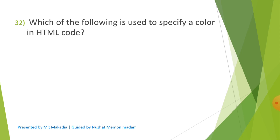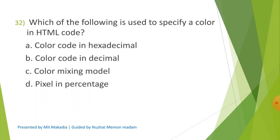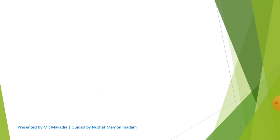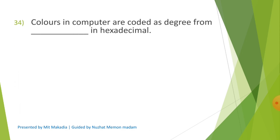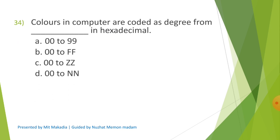Question 32: Which of the following is used to specify a color in HTML code? Options are A) Color code in hexadecimal, B) Color code in decimal, C) Color mixing model, D) Pixel in percentage. The correct answer is A) Color code in hexadecimal. Question 33: What symbol is used to specify color code in hexadecimal? Options are A) Ampersand, B) Dollar, C) Hash, D) Hash sign. The correct answer is C) Hash. Question 34: Colors in computer are coded as degrees from dash in hexadecimal. Options are A) 00 to 99, B) 00 to FF, C) 00 to ZZ, D) 00 to NN. The correct answer is B) 00 to FF.